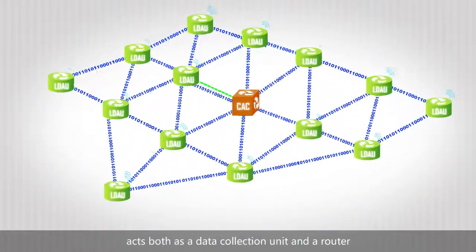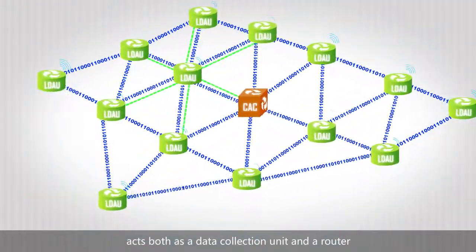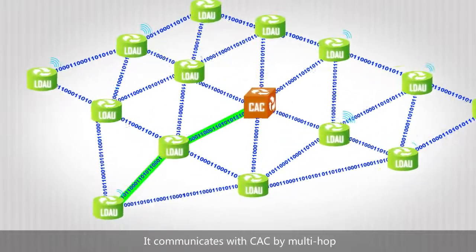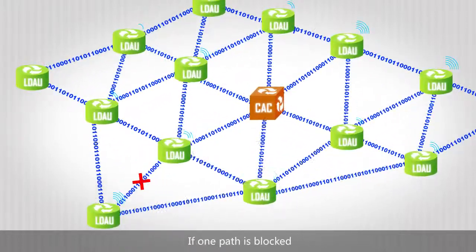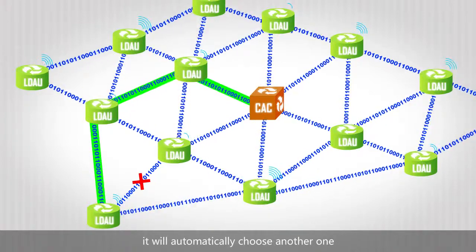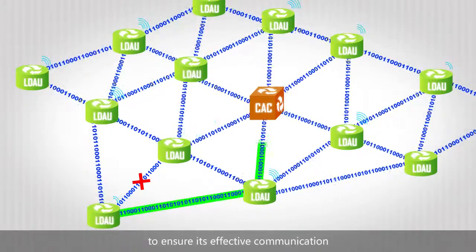An LDAU node acts both as a data collection unit and a router. It communicates with CAC by multi-hop. If one path is blocked, it will automatically choose another one to ensure its effective communication.